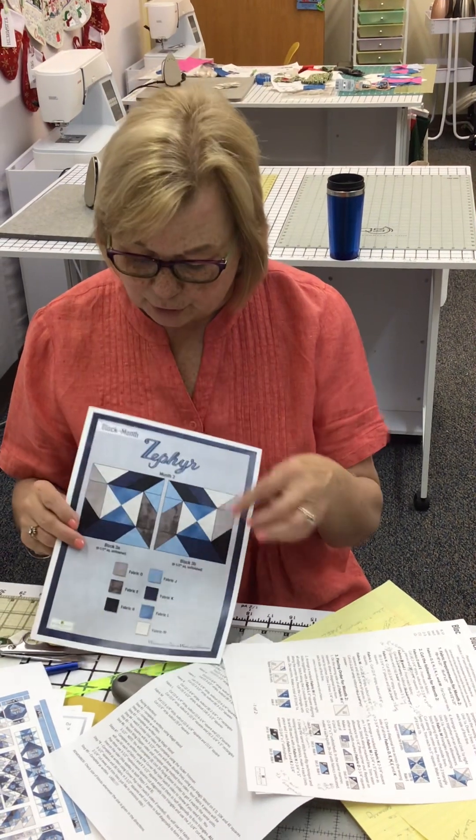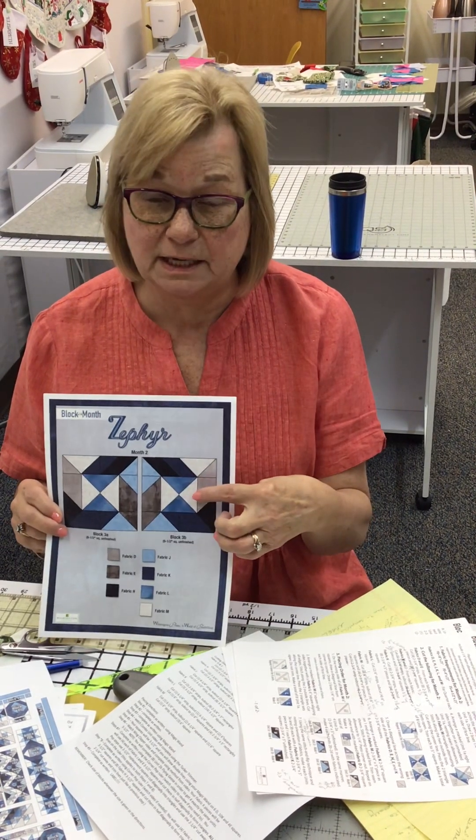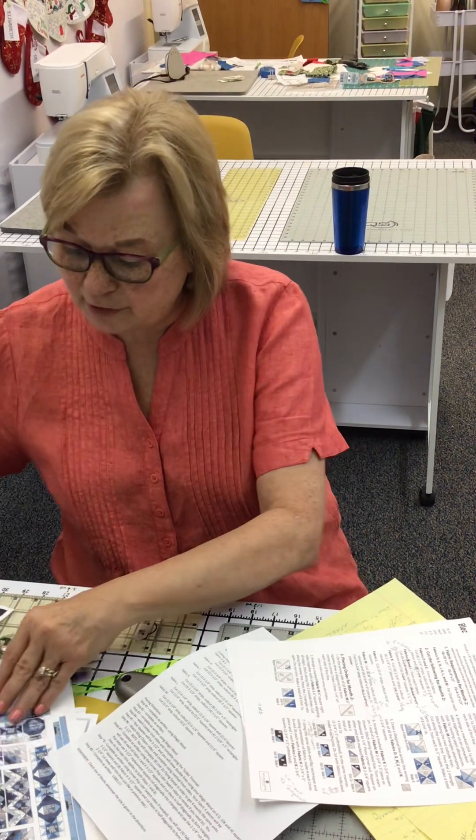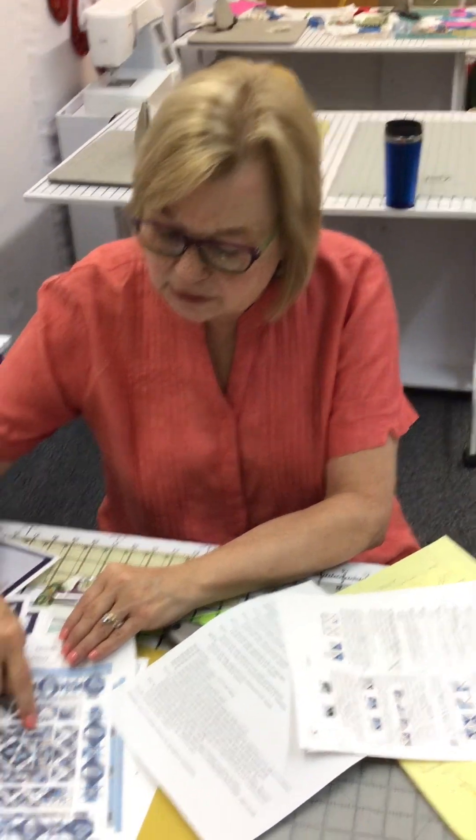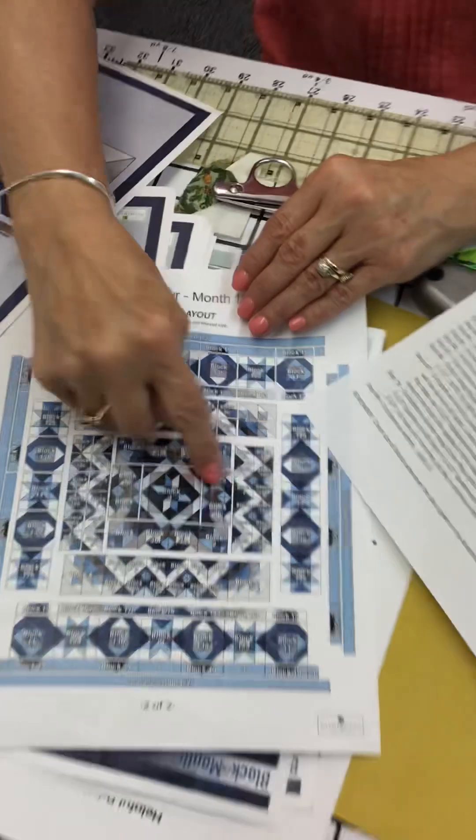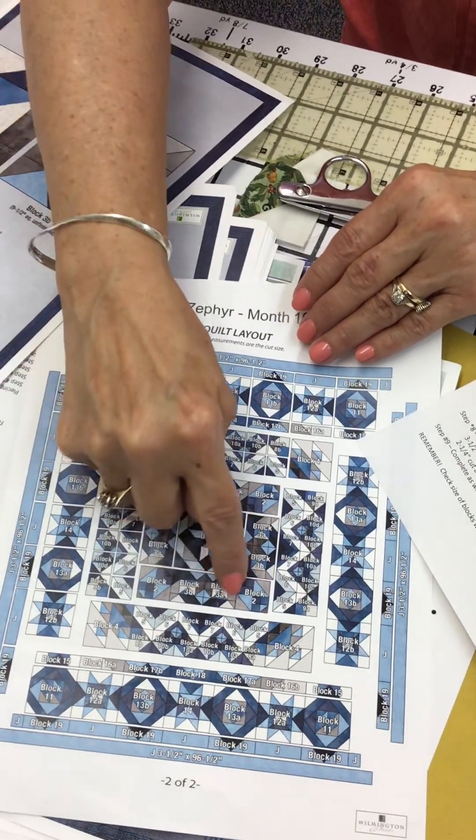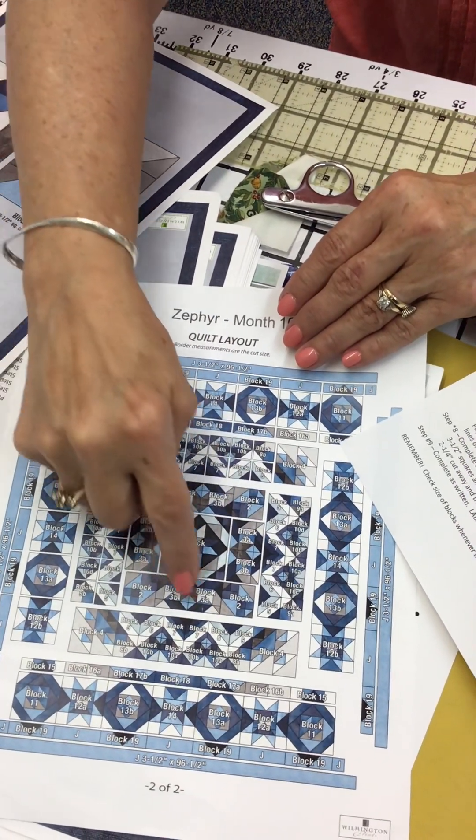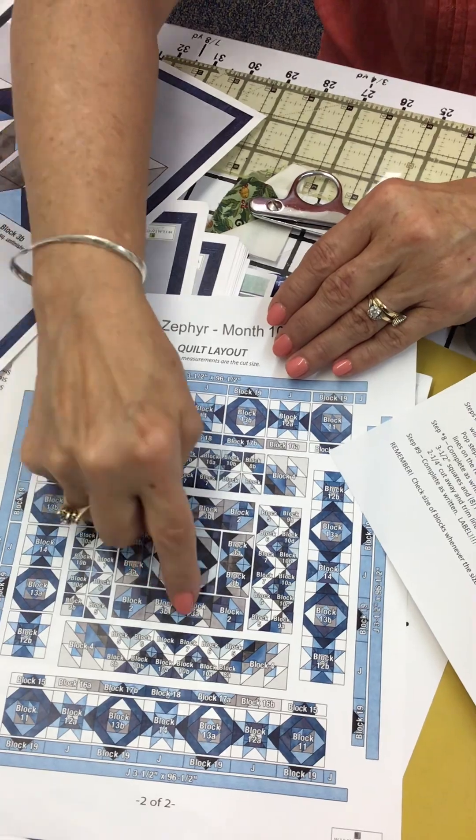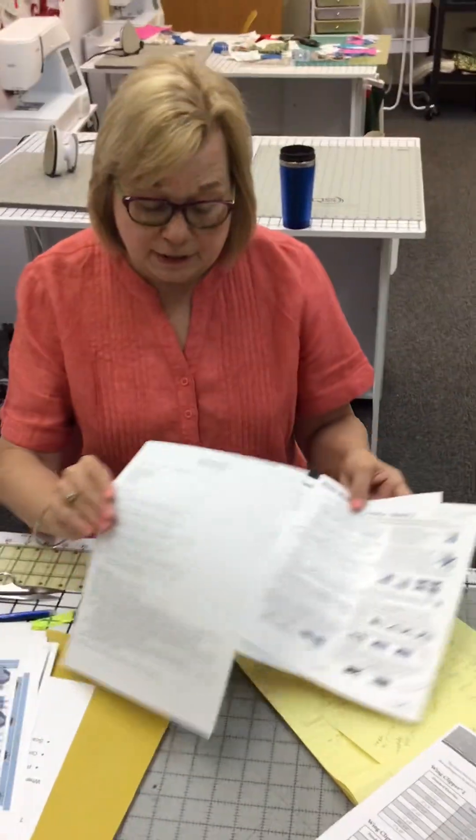This is month two. You will be making four of these blocks and four of these blocks. That's what you'll end up with. Those blocks insert into the quilt here, around the center block. So those are the blocks you'll be making this month. All right. Now, how to use these directions.